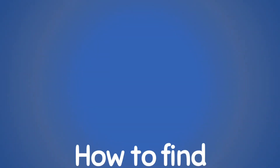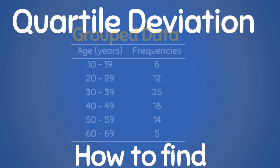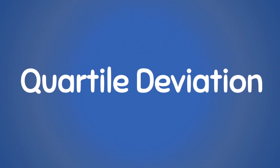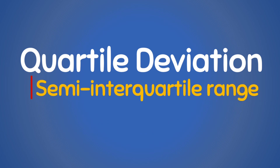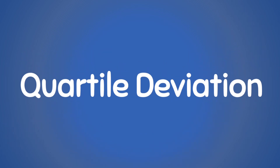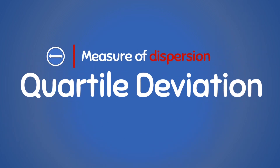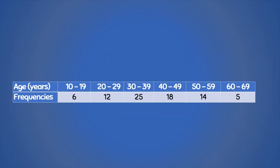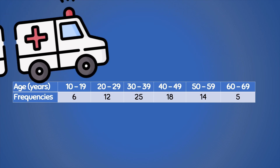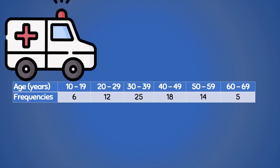Hey there, welcome back to our series on measures of dispersion. Today I'm going to show you how to compute and interpret the quartile deviation for grouped data. Quartile deviation, or what is commonly called the semi-interquartile range, is a measure of dispersion that quantifies the spread of data around the median. Now let us consider this data of the ages of patients admitted to the emergency unit of a hospital within the last week.